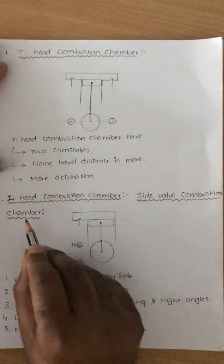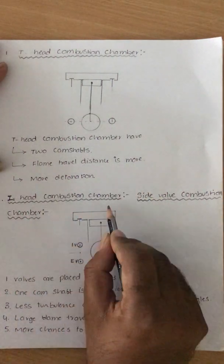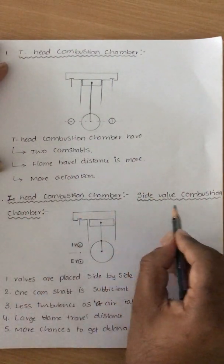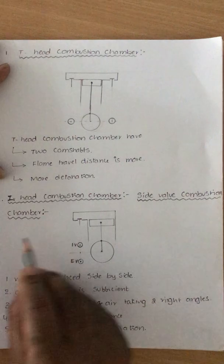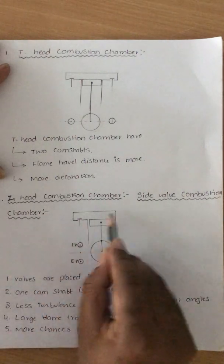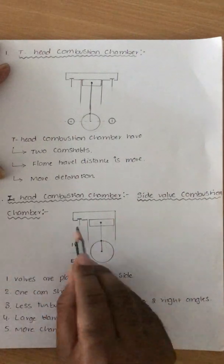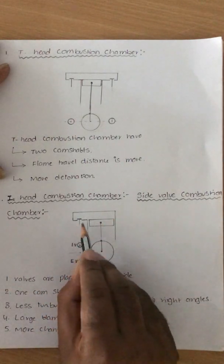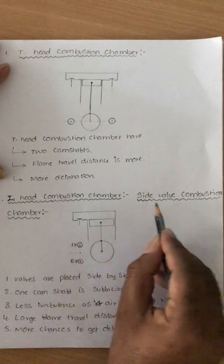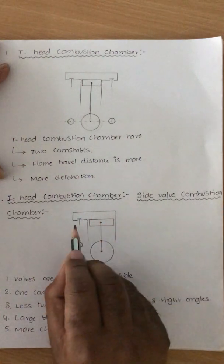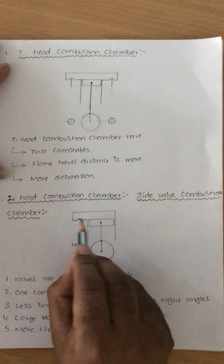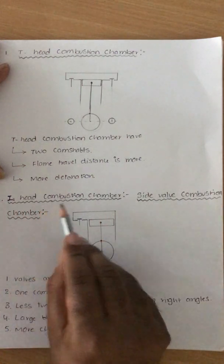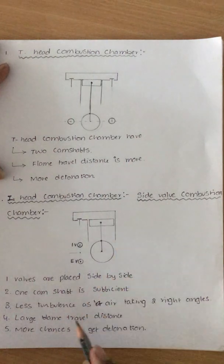That is why people move on to the L-head type combustion chamber, which is also called the side wall combustion chamber. If you look at the diagram it looks like an L shape and the valves are at the sides. That is why we call it the side wall combustion chamber, and because of the geometry you can also call it the L-head combustion chamber.